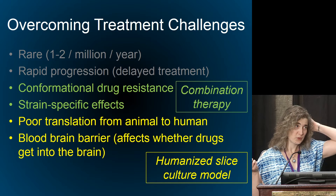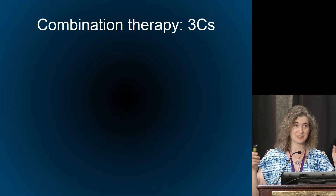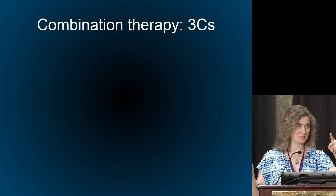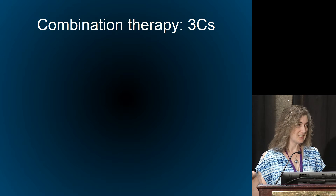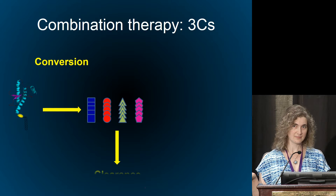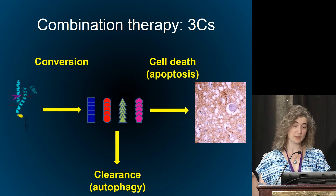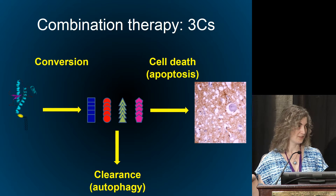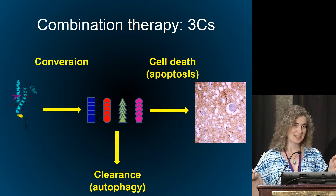For the simplified pathogenesis of prion disease — I'll have some thoughts on PRPC levels and suppression in questions — the three C's are: conversion, clearance, and cell death. These in principle are the areas we should target. Simply: we block conversion, we improve clearance, and we block cell death. Sounds lovely, but it's not easy.